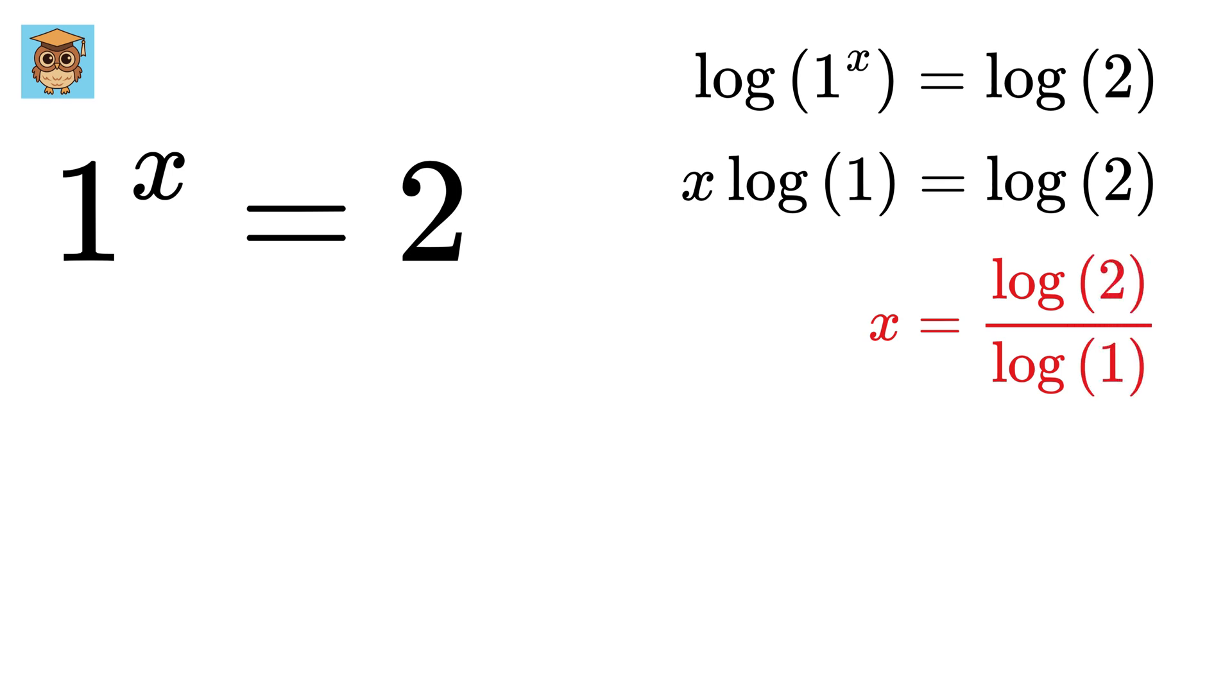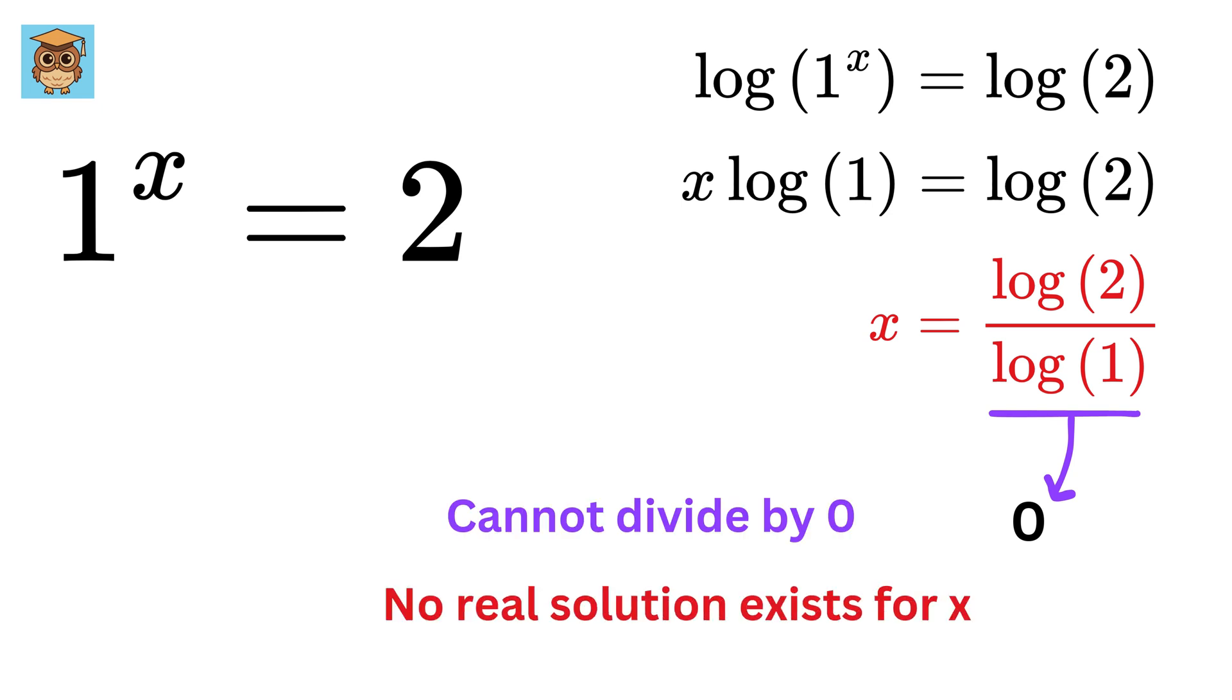Now, divide both sides by natural log of 1. But natural log of 1 is 0. And we cannot divide by 0. So no real solution exists for x.